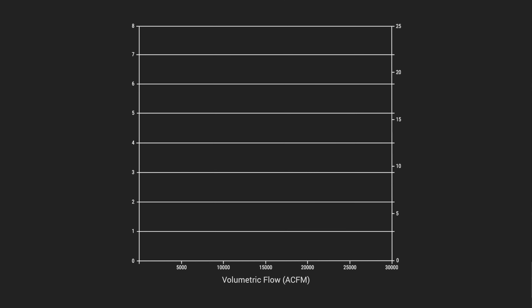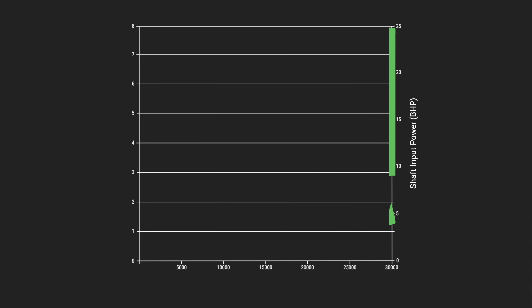Airflow is plotted along the x-axis at the bottom of the curve, often quantified as cubic feet per minute. Static pressure is plotted along the y-axis on the left side of the curve, commonly quantified as inches of water gauge. Power consumption is plotted along the secondary y-axis on the right side of the curve. You can reference our previous videos about fan laws for common metric units of measurement for each of these axes.